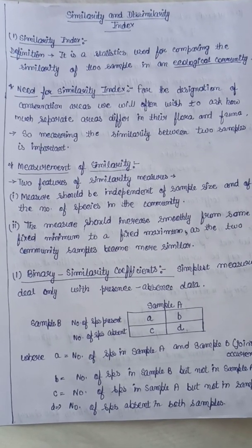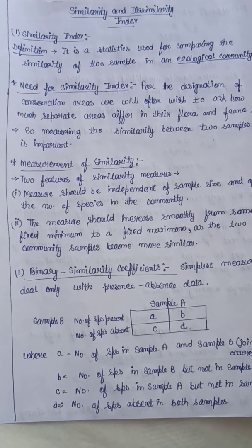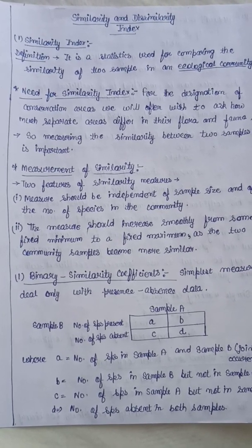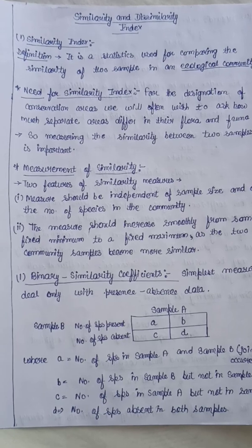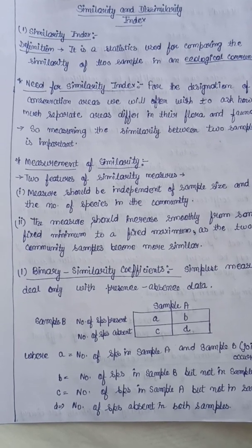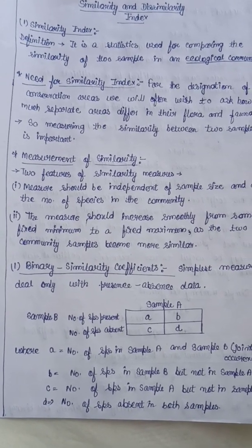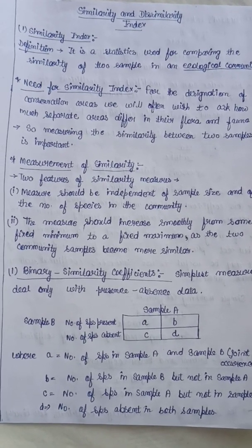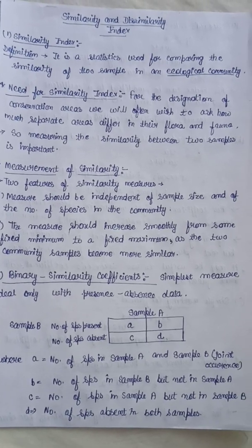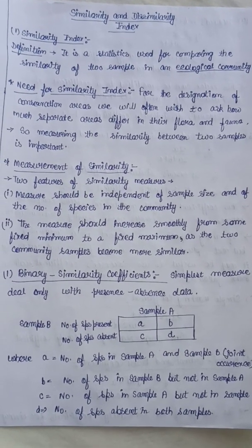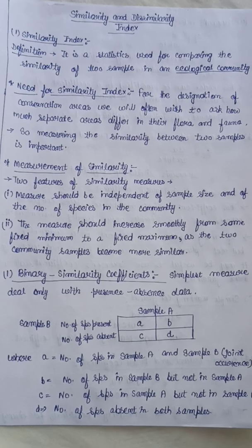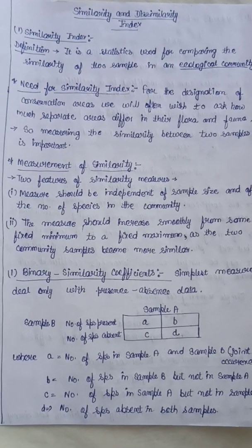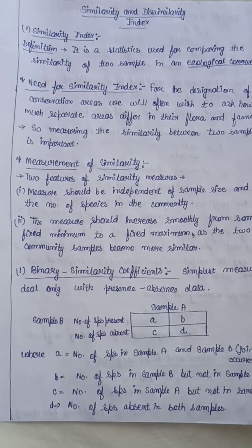Welcome back. Yesterday we discussed the association index, a type of biodiversity index. Today we are going to discuss the similarity index. It is a statistic used for comparing the similarity of two samples in an ecological community. An ecological community is an assemblage of species in a defined geographic area — for example, fish in a lake, or plants in a meadow.